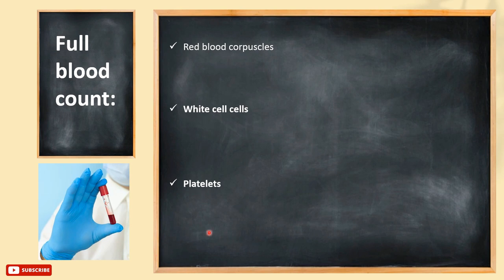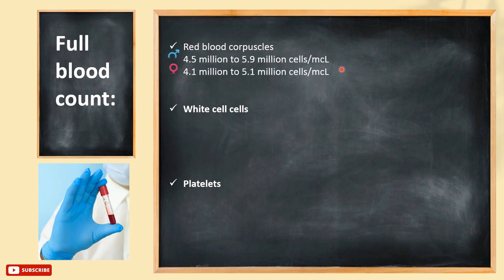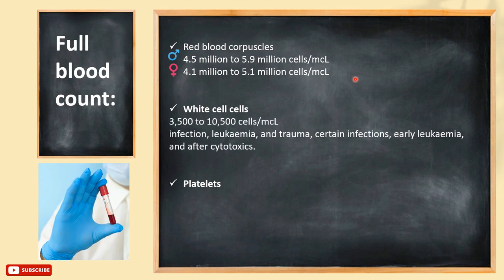Continuing with the complete blood count. Red blood corpuscles (RBCs) — we call them corpuscles, not cells, because they lack a nucleus. Their function is to hold oxygen and carbon dioxide. Here is the normal number of cells measured in cells per microliter, varying between males and females. White blood cells are related to immunity. They increase in cases of inflammation, infection, or other health problems, and can also be decreased, which puts the person at a higher risk of infection. Here is the normal number of cells per microliter.